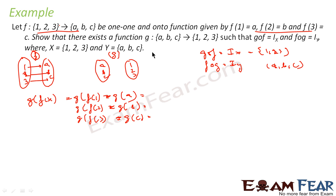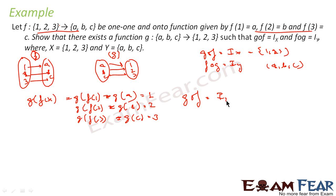The question asks us to prove there exists a function g such that gof = I_X, meaning the output must be 1, 2, 3. If we define the mapping as g(a) = 1, g(b) = 2, and g(c) = 3, then gof(x) gives back 1, 2, 3 — which are elements of X — so gof = I_X.